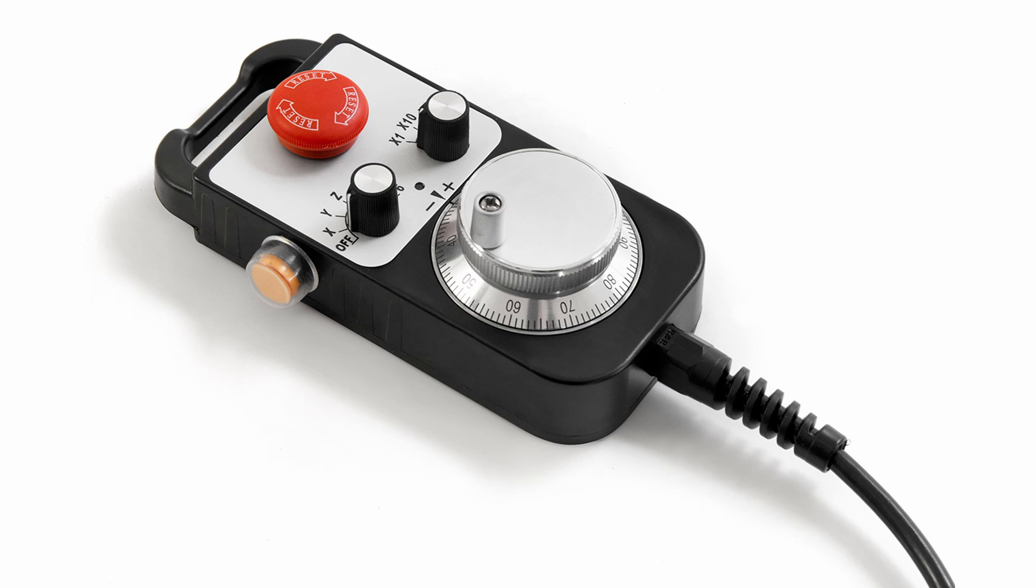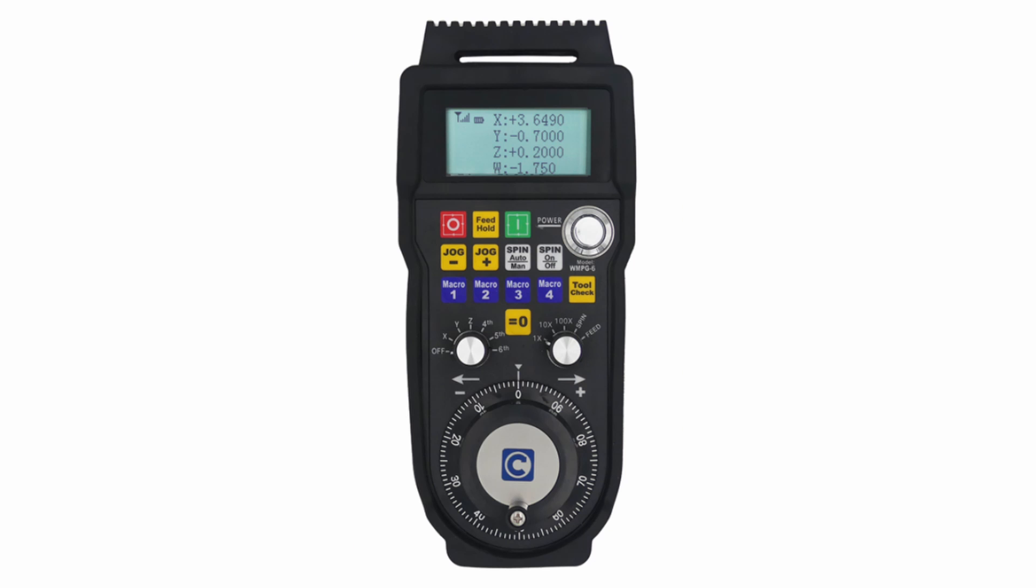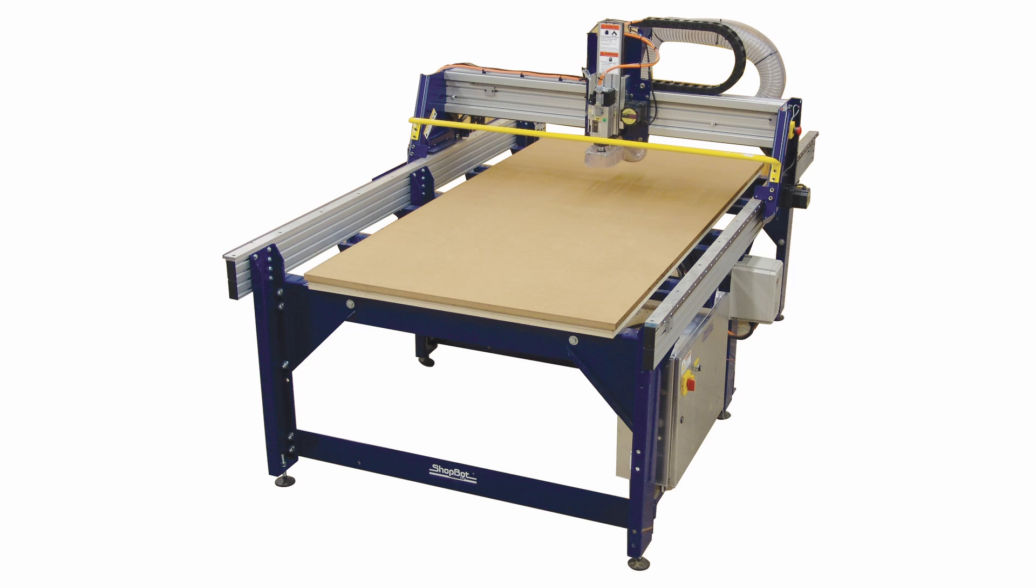In the CNC world, a pendant is a small handheld device that allows limited control of the machine. Some machines are large and the control interface, typically a computer, is often out of reach. You can use a pendant right at the machine to set up your job for jogging, probing, and setting work offsets. You can also monitor, pause, and adjust feed rates on a running job.